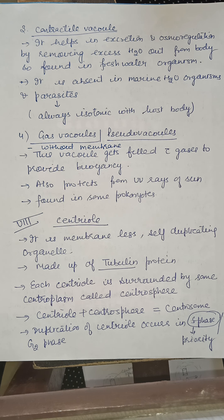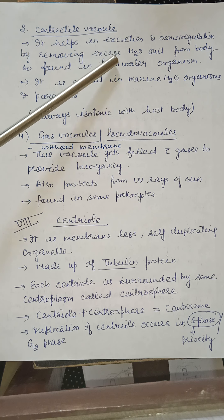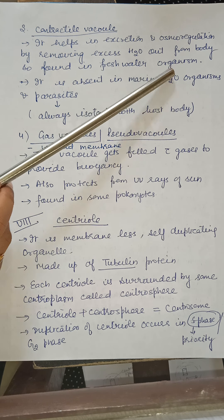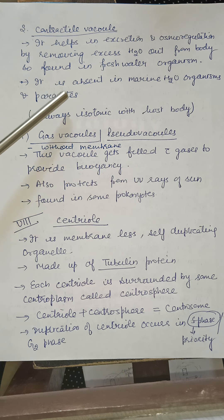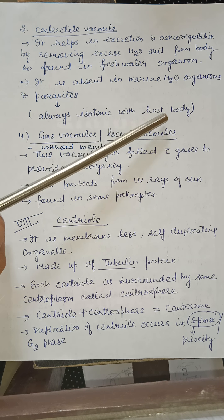The contractile vacuole is generally present in single-celled protozoans. It helps in excretion and osmoregulation by removing excess water from the body. It is found in freshwater organisms and is absent in marine water organisms and parasites, because parasites are always isotonic with the host body.